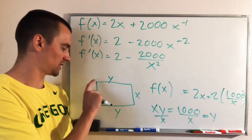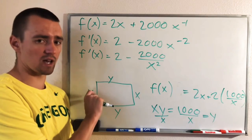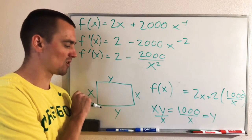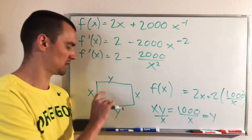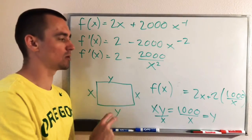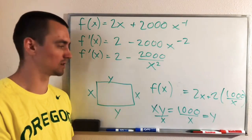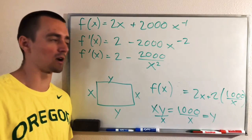But remember, X represents the length of this side of a rectangle. If X is 0, that doesn't even really make sense because then this rectangle would not be able to have an area of 1,000. It would have an area of 0. It wouldn't be a rectangle.